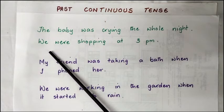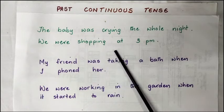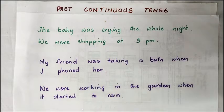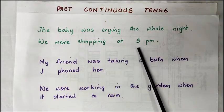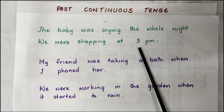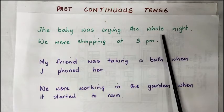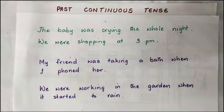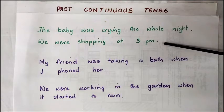Next: 'we were shopping at 3pm.' This sentence is used to show an action that was going on at a time in the past — at 3pm. The previous example happened during a period of time — the whole night. Both are ways of using the past continuous tense to describe something that happened in the past.